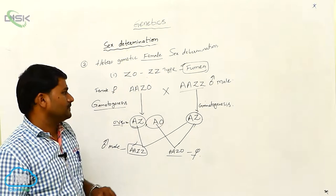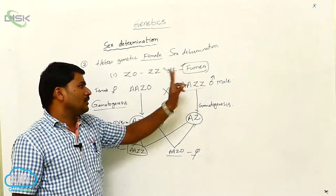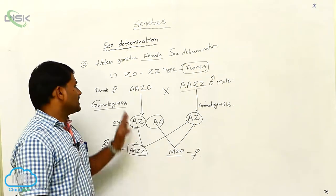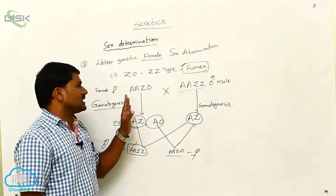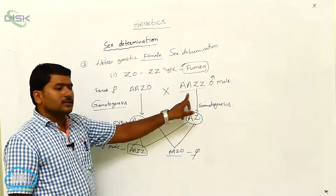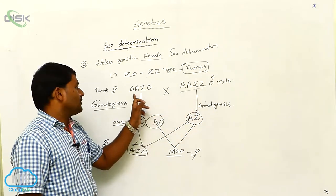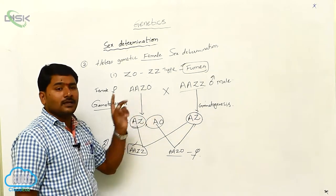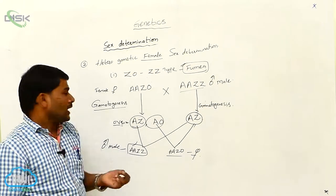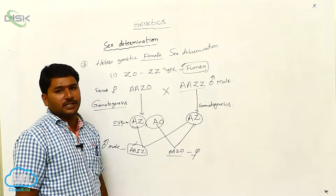This is the first type. The Z0/ZZ type can be seen in fumea moths. In the Z0/ZZ type, the male has the same type of sex chromosomes, while the female has one less sex chromosome. The female karyotype is A, A, Z, 0.